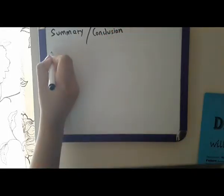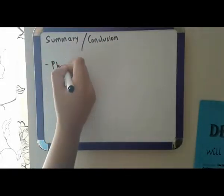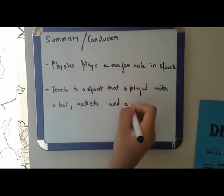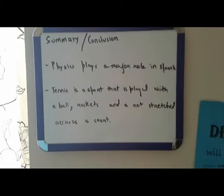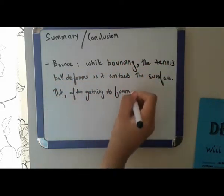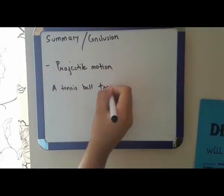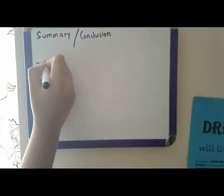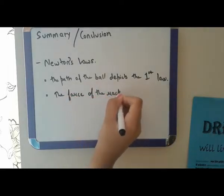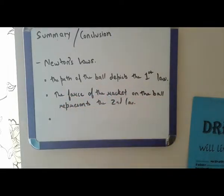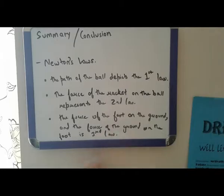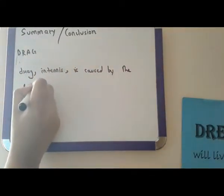To conclude this video, we will give you a short summary. Physics plays a major role in tennis and many other sports. Tennis is a racket sport played with a ball, rackets, and a net stretched across the court. While bouncing, the ball deforms when it contacts the surface, but as soon as it returns to its form, it returns to the air. A tennis ball travels in projectile motion when hit by the racket. Newton's laws also come into play: the path of the ball depicts the first law, the force of the racket on the ball represents the second law, and the force of your foot on the ground and the ground's force on your foot is the third law. In tennis, drag is caused by the friction the ball and the air produce.